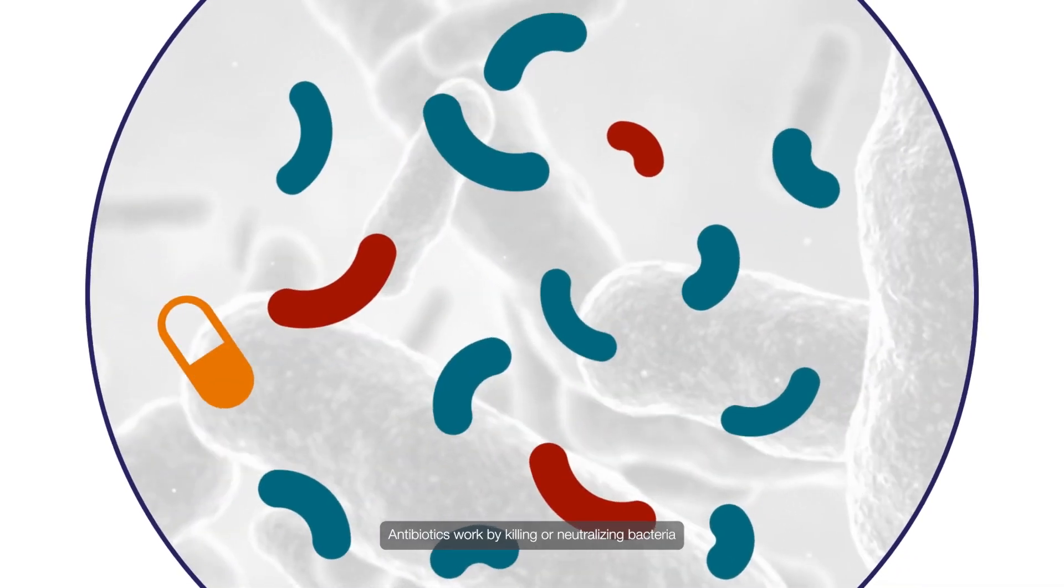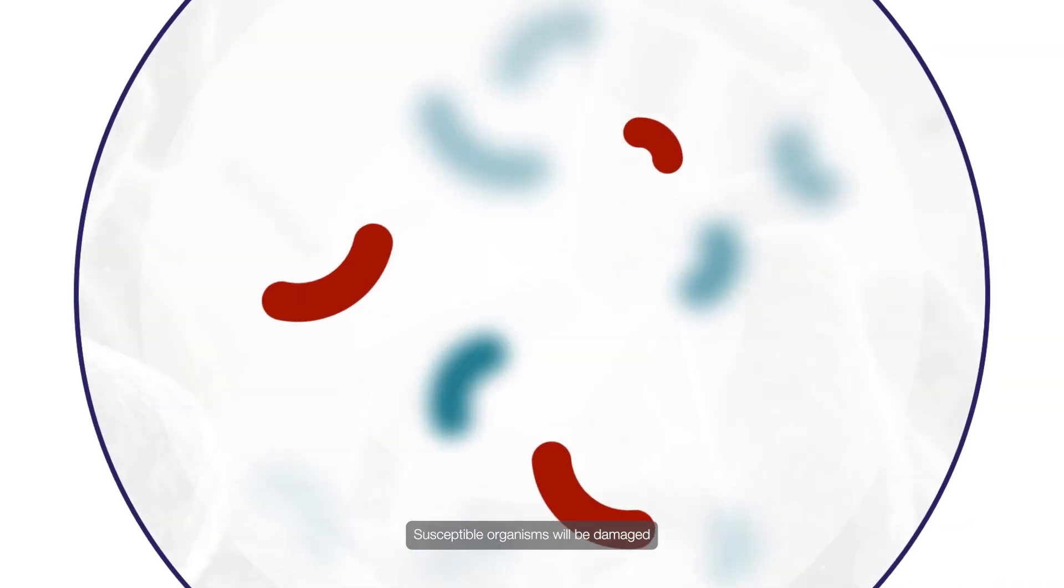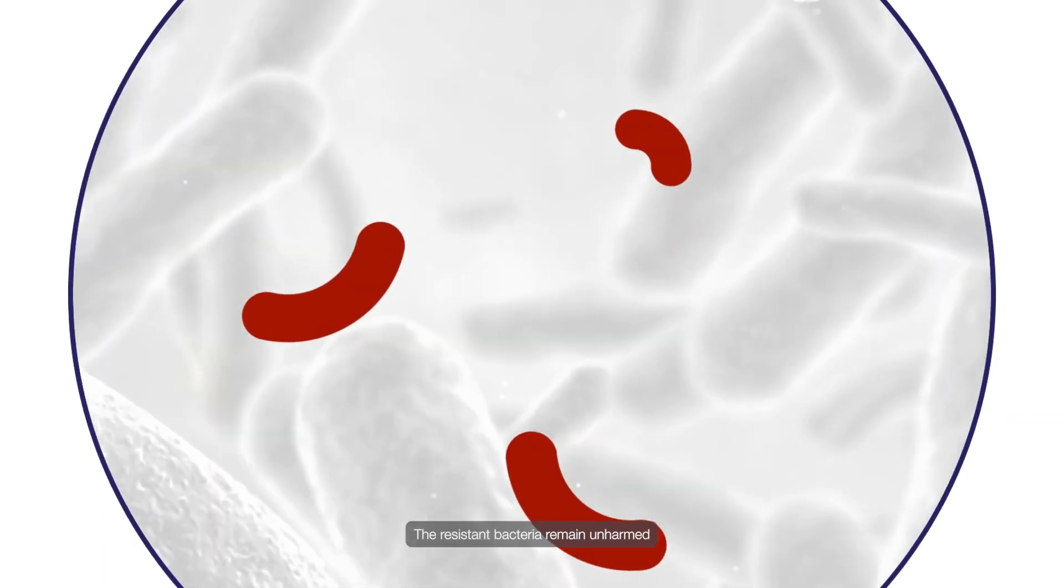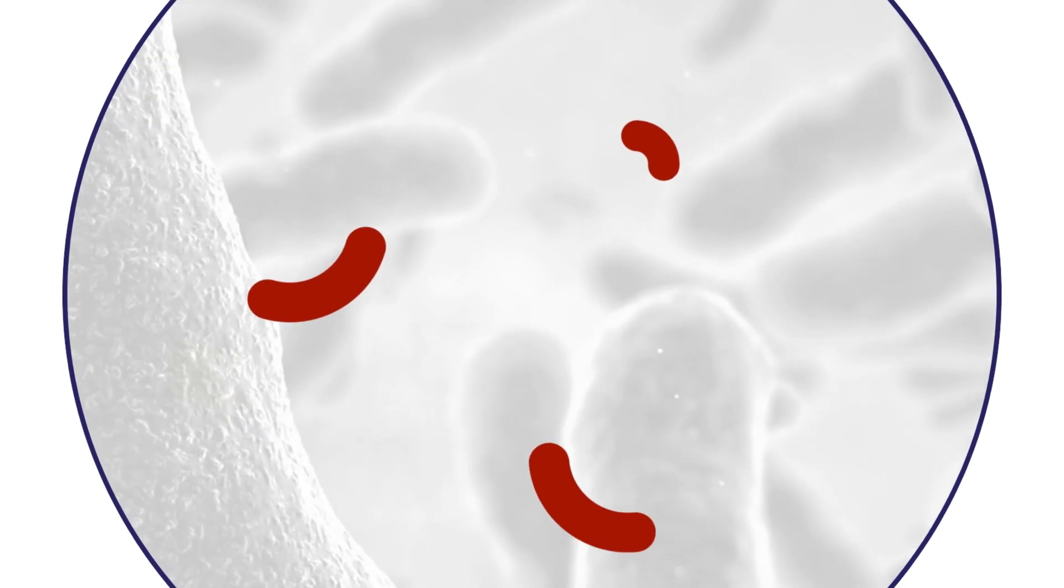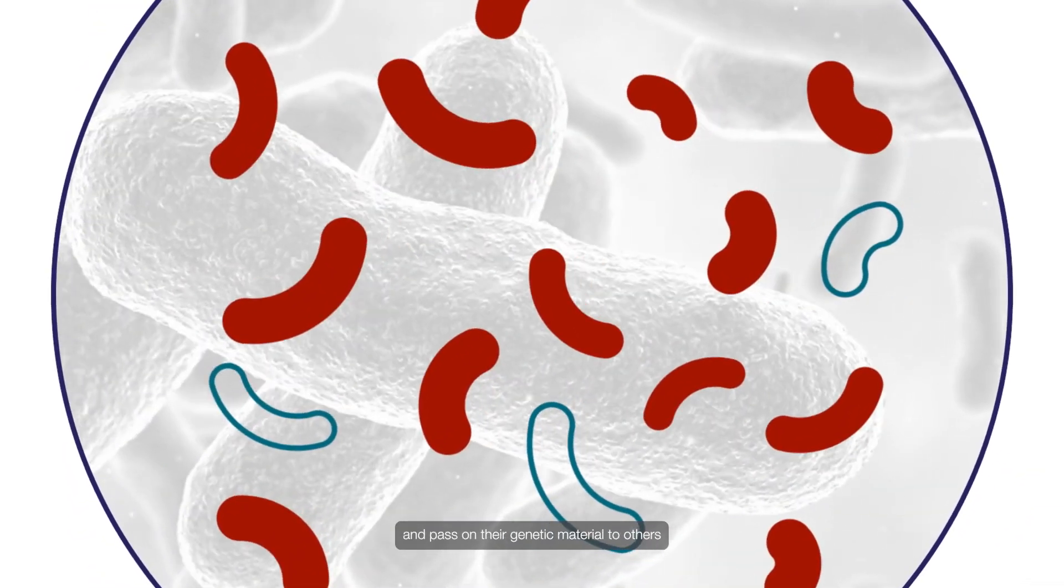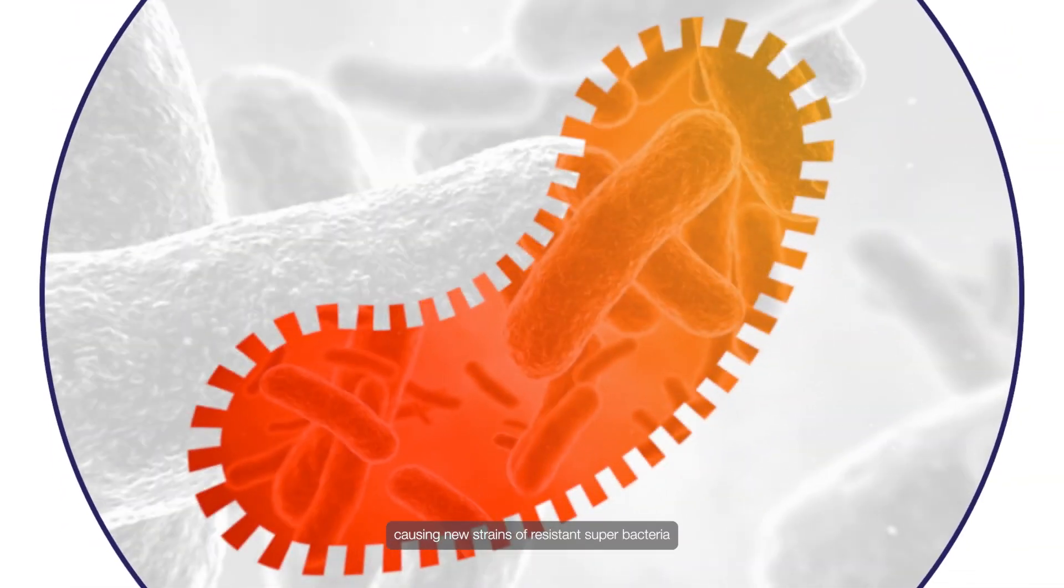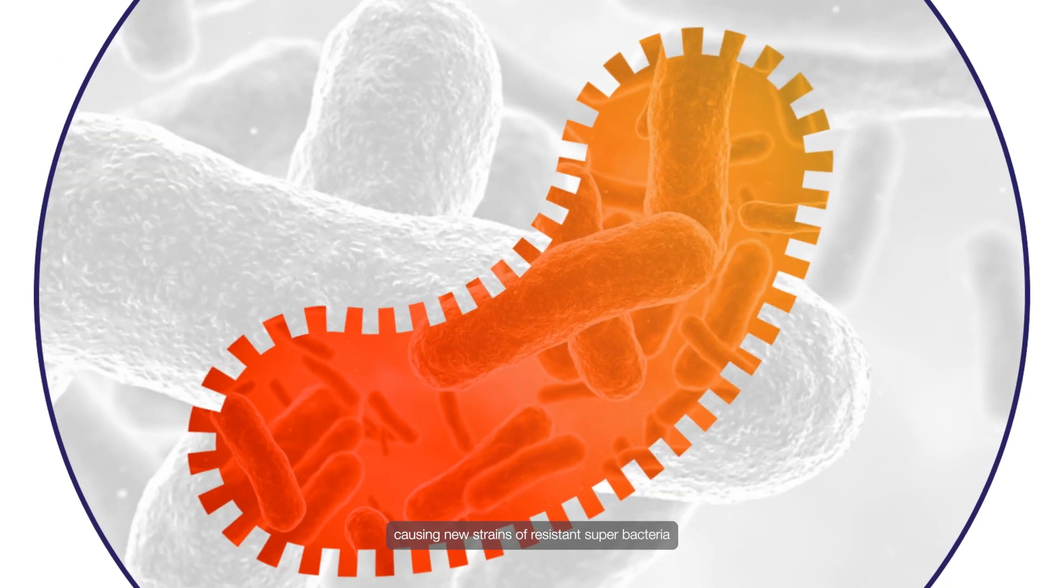Antibiotics work by killing or neutralizing bacteria. Susceptible organisms will be damaged. The resistant bacteria remain unharmed. But drug-resistant bacteria can continue to proliferate and pass on their genetic material to others, causing new strains of resistant superbacteria.